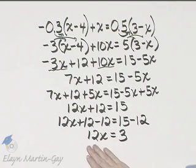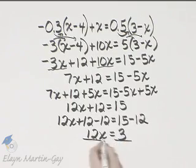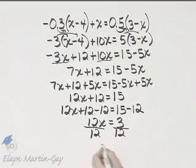Notice I've got variables on one side, numbers on the other, and now let's finish solving by dividing both sides by the coefficient of x, which is 12.